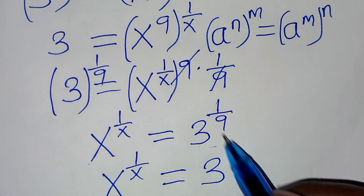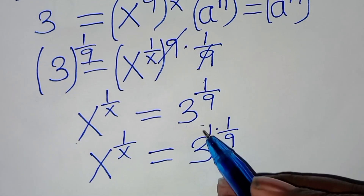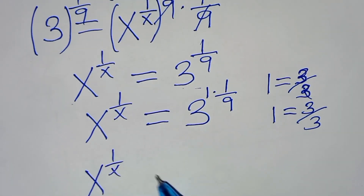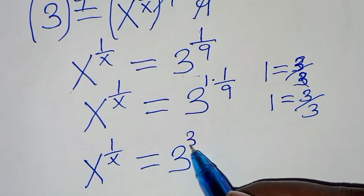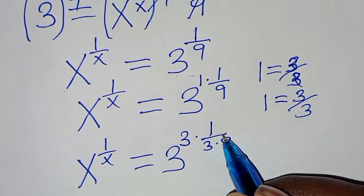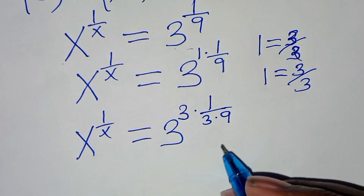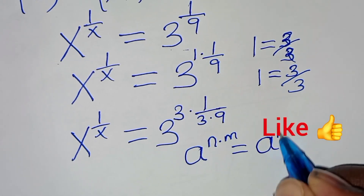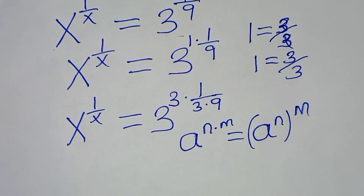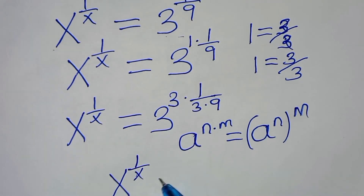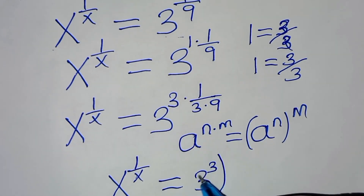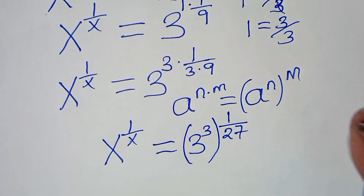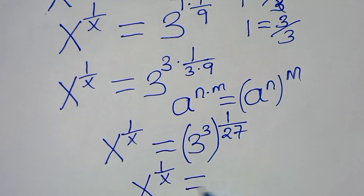We have x to the power of 1 over x equal to 3 raised to power 1 times 1 over 9. We can express this 1 as 3 over 3, so now we have x to the power of 1 over x equal to 3 to the power of 3 times 1 over 3 times 9. Applying the exponent property, this gives us x to the power of 1 over x equal to 3 to the power of 3, raised to the power of 1 over 9 times 3, which is 1 over 27.